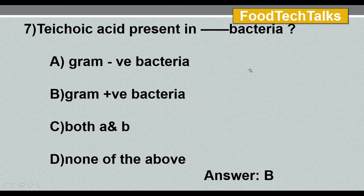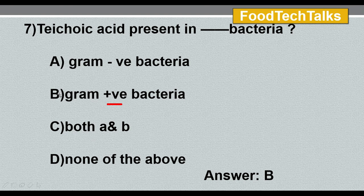Seventh question: teichoic acid is present in which bacteria? Options: A) gram-negative bacteria, B) gram-positive bacteria, C) both, D) none of the above. The answer is option B, gram-positive bacteria. Teichoic acid is present in the cell wall of gram-positive bacteria. It binds with cations such as magnesium and sodium and gives rigidity to the cell wall.